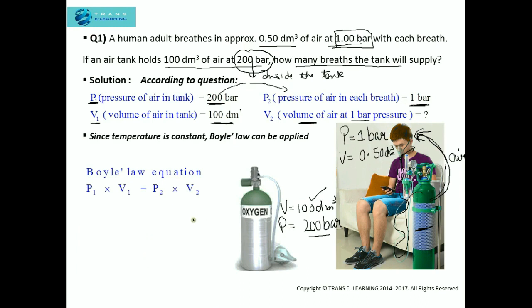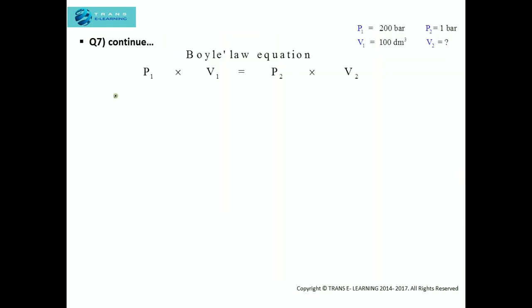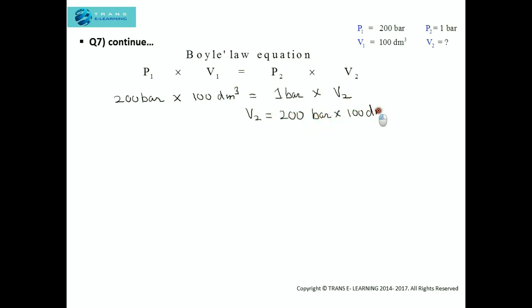As the temperature is constant, we can apply Boyle's Law. Before substituting values, we check the units. The initial pressure is in bar, and the final pressure P2 is also in bar, so the units are the same and no conversion is needed. Pressure 1 is 200 bar, Volume 1 is 100 decimeter cube, Pressure 2 is 1 bar, and Volume 2 we need to find.